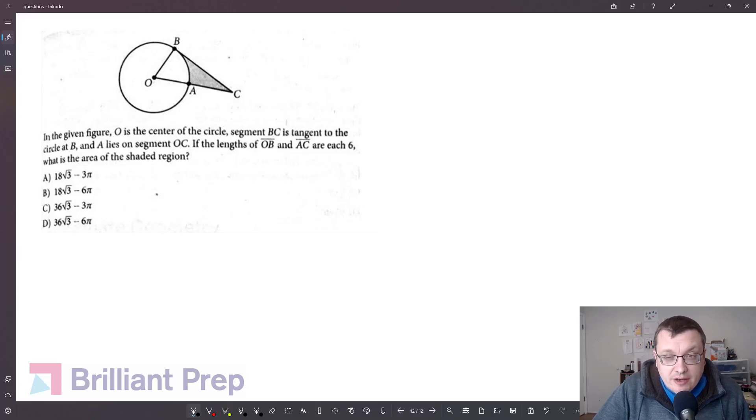Here we have a classic shaded area problem. Let's begin by writing down all the information we know and either drawing a new picture, or in this case, I'll just label the picture that we have, and we'll go through the problem and see what they give us. So they tell us that O is the center. They tell us that BC is tangent to the circle at B. We know that A lies on that segment OC. We're told that OB and AC are each 6. So this is 6 and this is 6. What is the area of the shaded region? So we want the area of this piece.